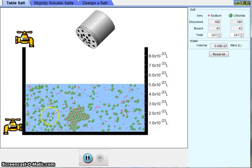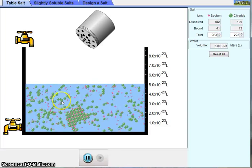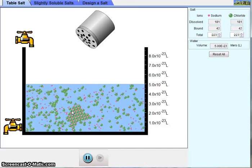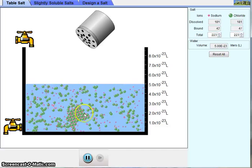At the same time, there are ions, either sodium or chloride, which were in the dissolved state, which are going to reattach themselves onto the crystal. So we have two competing processes.